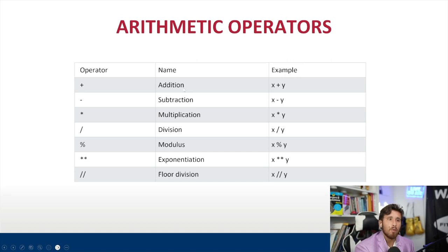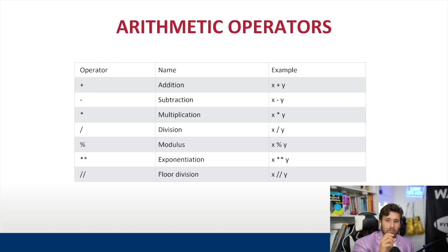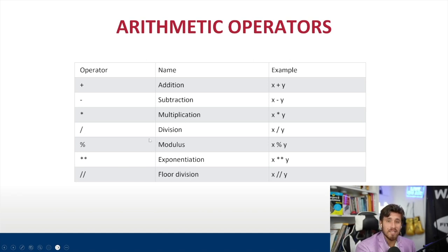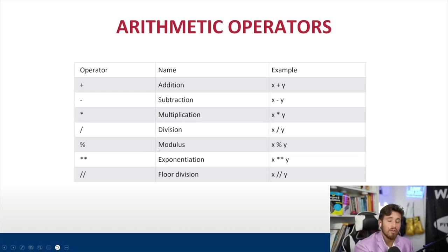Let's look at the arithmetic operators. Plus means addition — but when you have two strings and use the plus operator, you're concatenating them, so 'Matthew' plus 'Win' will print 'MatthewWin' without a space. For numbers: addition uses plus, subtraction uses minus, multiplication uses the star symbol, division uses the slash. Modulus is the remainder operator — it gives you the remainder of one number divided by another. For example, 10 modulus 2 gives 0, since 2 divides 10 equally into 5, but 11 modulus 2 gives 1 because 2 fits into 11 five times with a remainder of 1.